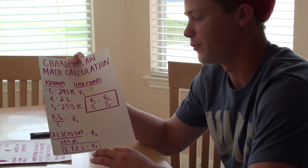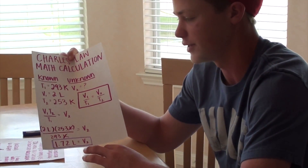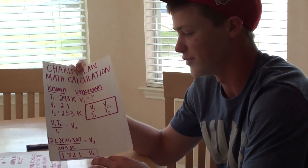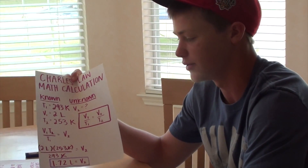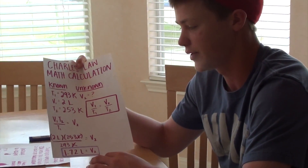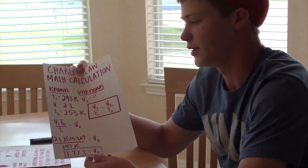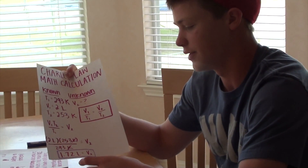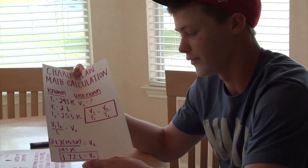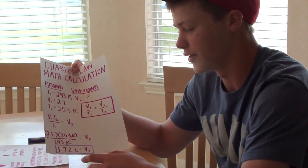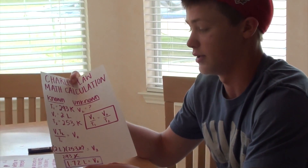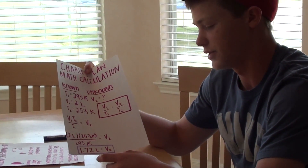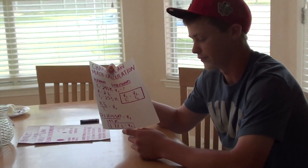We made up some data just so it was reasonable to the equation. We took V1 over T1 equals V2 over T2 and manipulated it to solve for V2. We plugged in the data we came up with: 2 liters times 253 Kelvin over 293 Kelvin. The Kelvin units cancel, and that equals 1.72 liters, which is the volume.